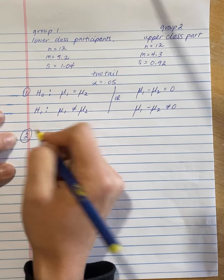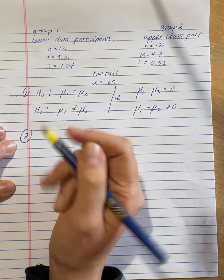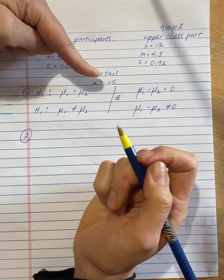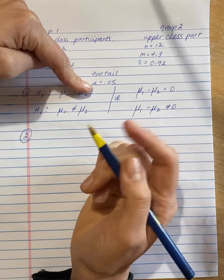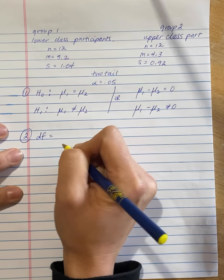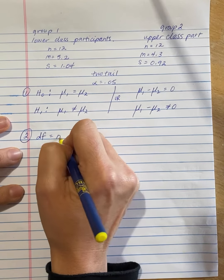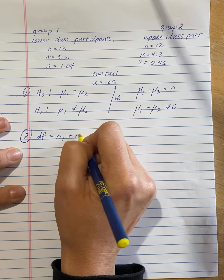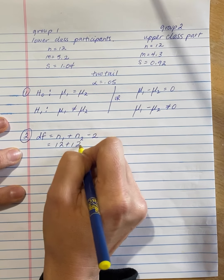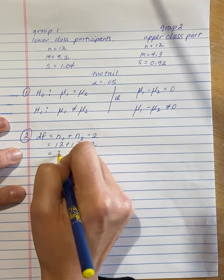Step two, we need to find our critical values. The critical values require that we know we have a two-tailed test. We need the alpha level and we need our degrees of freedom. For an independent samples t-test, the degrees of freedom is n1 plus n2 minus 2. So that's 12 plus 12 minus 2, so 22.